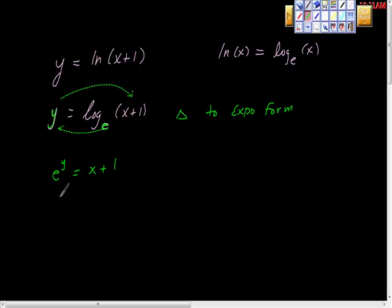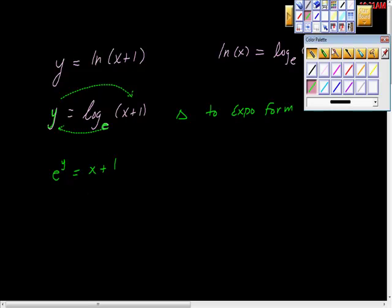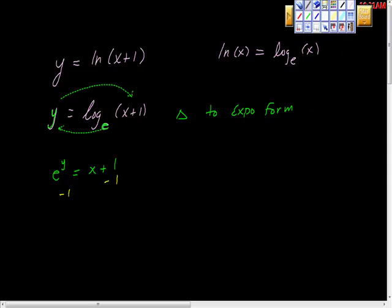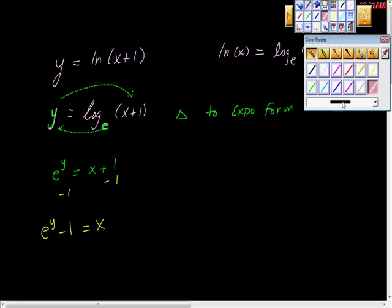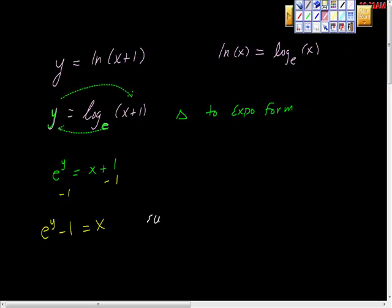And from here, remember we're solving for x. So what I'm going to do on both sides is add negative 1 to both sides. And we get e to the power of y minus 1 is equal to x. And then remember, people do this differently, I guess. Some people switch x and y first, and I don't think it matters. So now I'm going to switch x and y.